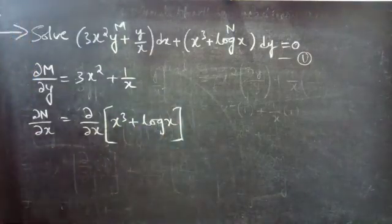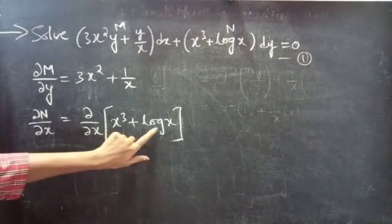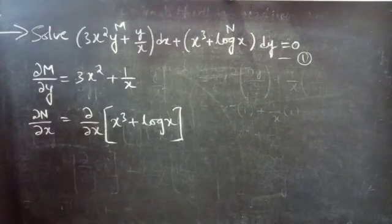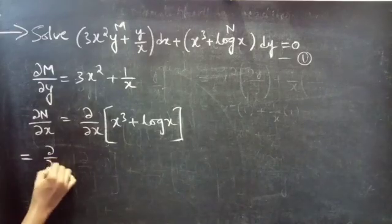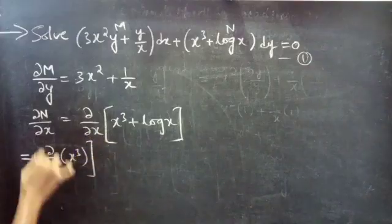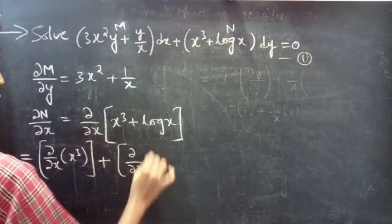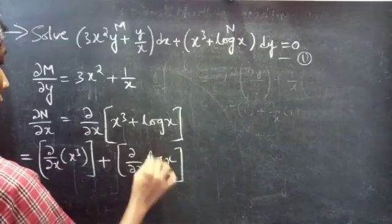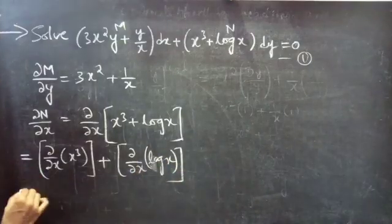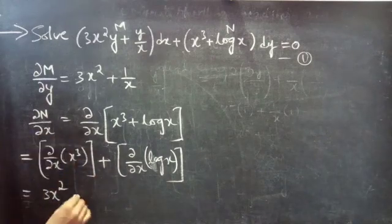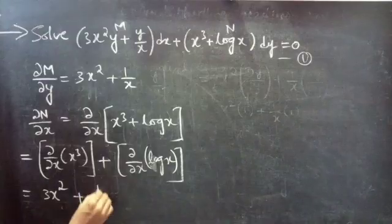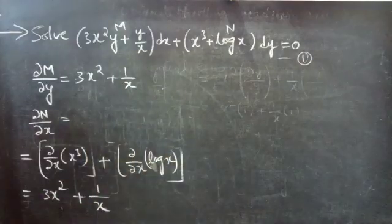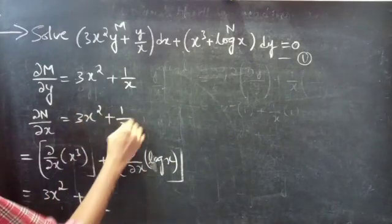Here we are doing the partial derivative with respect to x and we don't have any y term. This equals the partial derivative of x³ (the first term) plus the partial derivative of the second term, which gives 3x² plus the partial derivative of log x with respect to x, which is 1/x. Therefore, the partial derivative of N with respect to x is 3x² + 1/x.